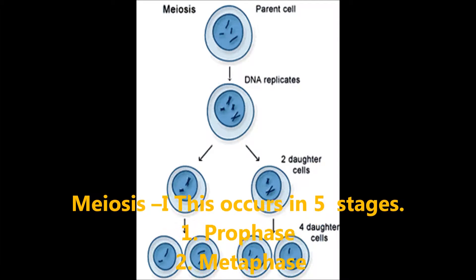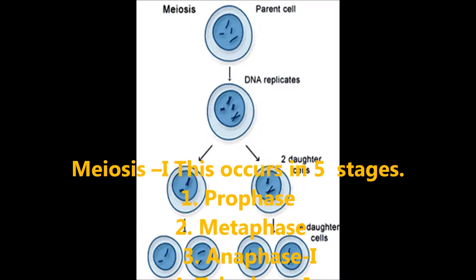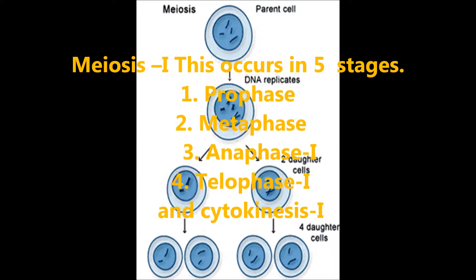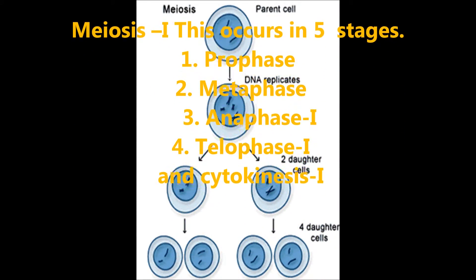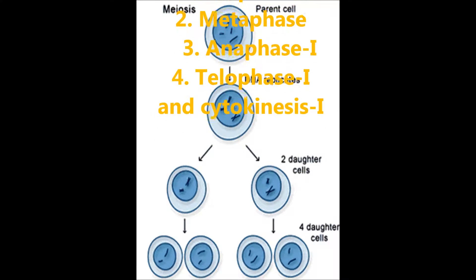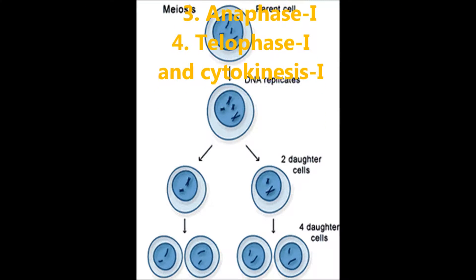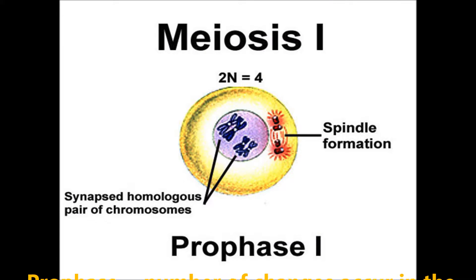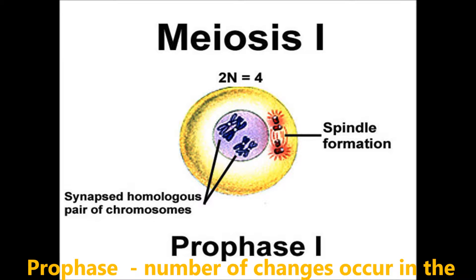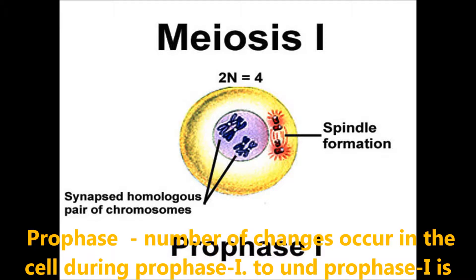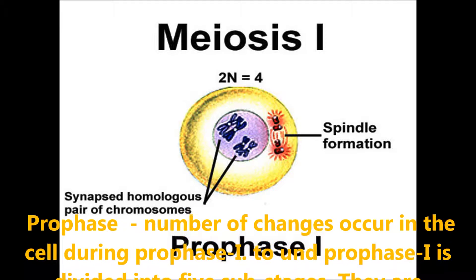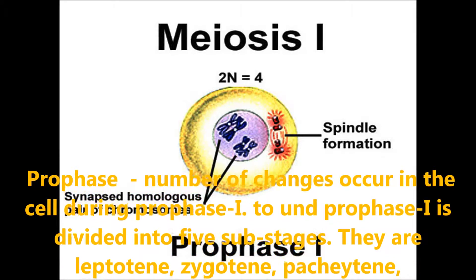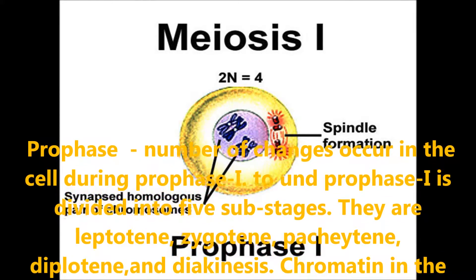Meiosis 1 occurs in five types of divisions: prophase, metaphase, anaphase, telophase, and cytokinesis. During prophase 1, a number of changes occur in the cell. Prophase 1 is divided into five sub-stages.